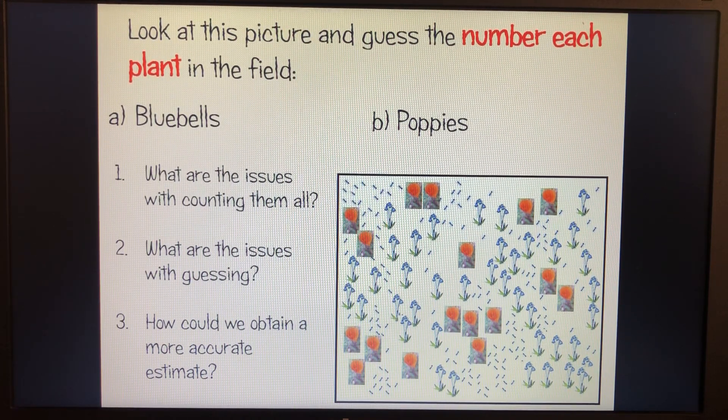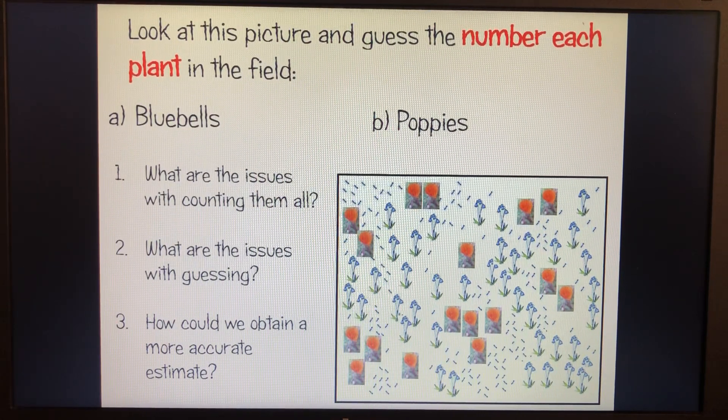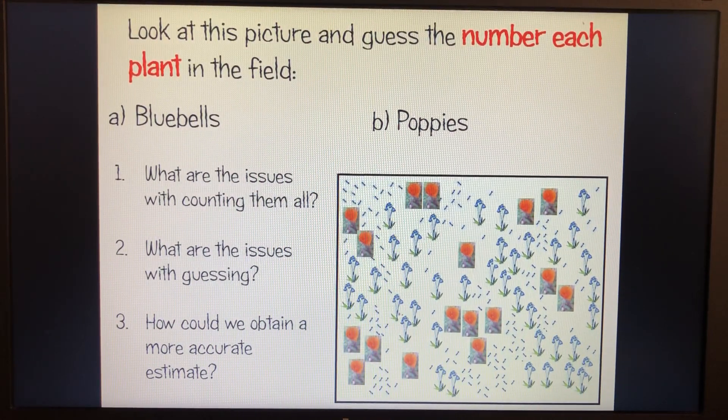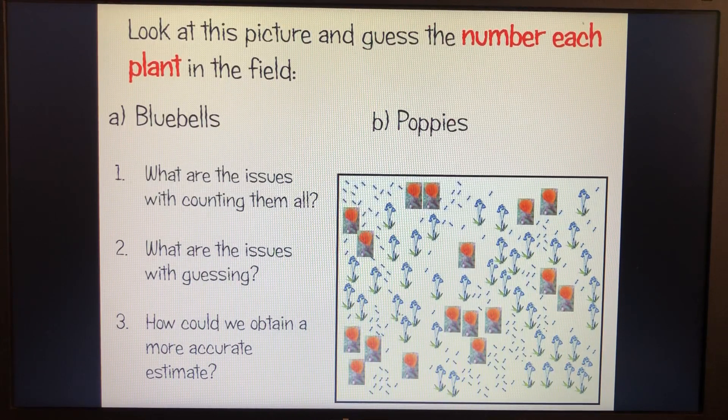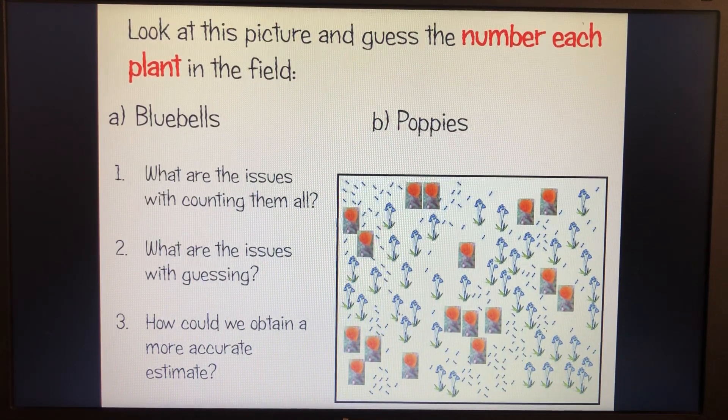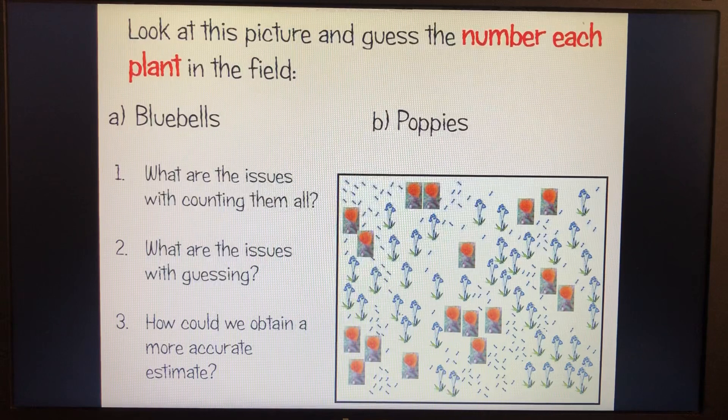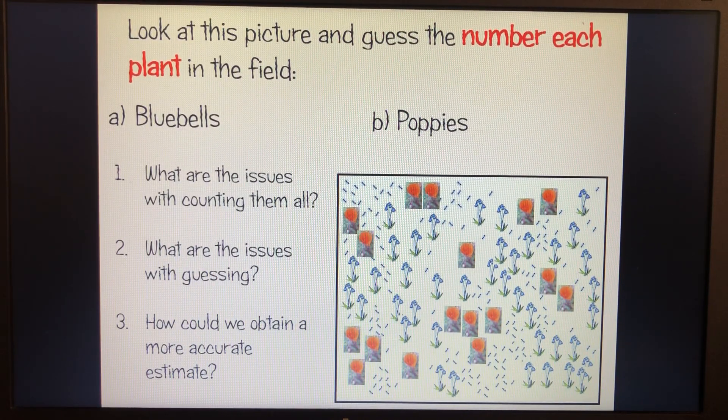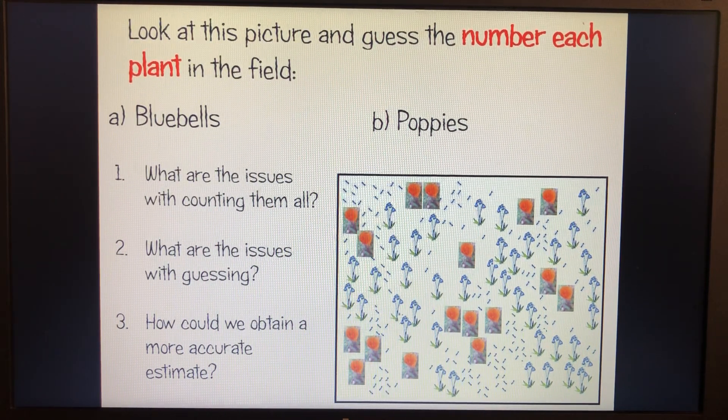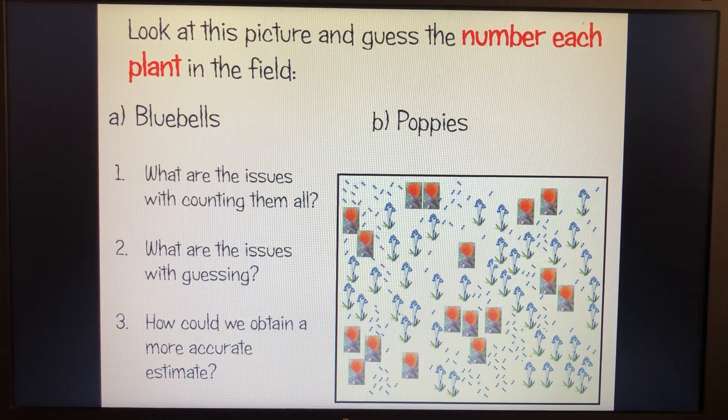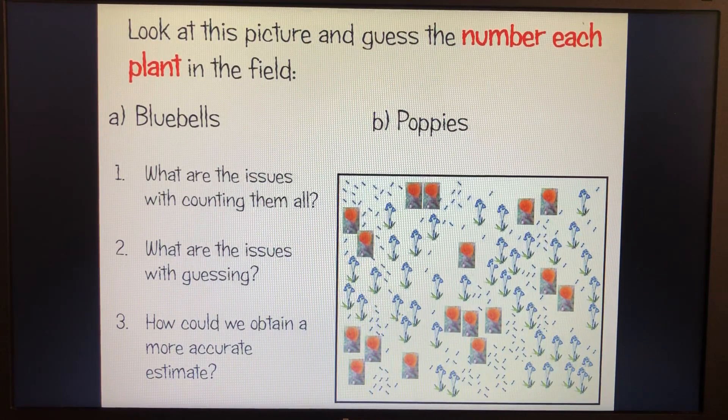We could go ahead then and count all of the bluebells as well, it might be a bit more time consuming. But the point that we're trying to make with this is we can't go out onto say the school field and just count everything. It would take far too long. We'd probably make mistakes along the way. And actually for the amount of time and effort we'd put into it, it wouldn't really be worth it. So issues with counting them all is that it's very time consuming, issues with guessing, we could all guess very different numbers from each other and people's guessing abilities isn't always particularly accurate.